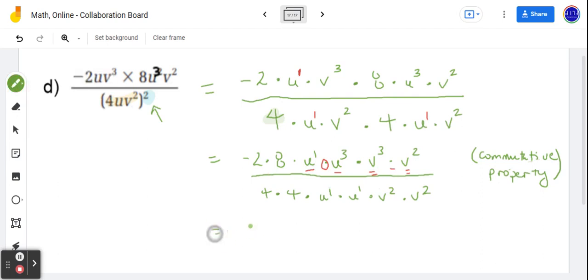So negative 2 multiplied by 8 is negative 16. And that would be multiplied by u to the 1 plus 3. And multiplied by v to the 3 plus 2. Divided by 16. Multiplied by u to the 1 plus 1 plus 1. And multiplied by v to the 2 plus 2.